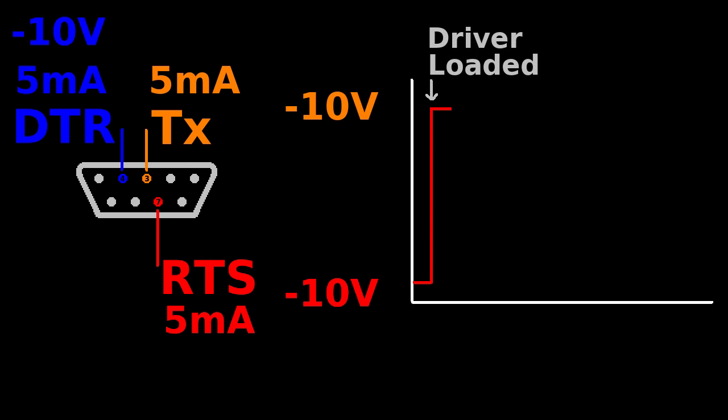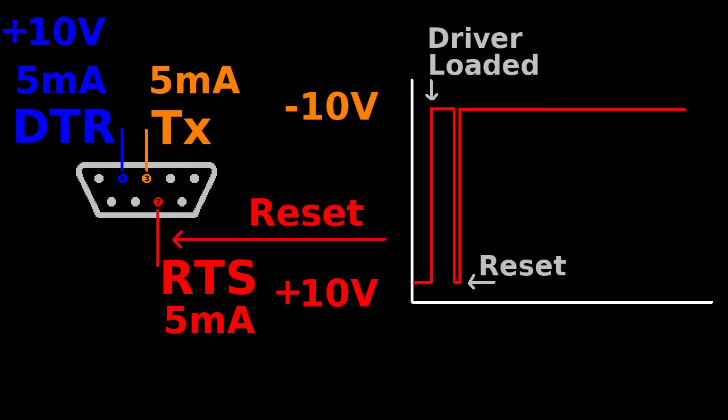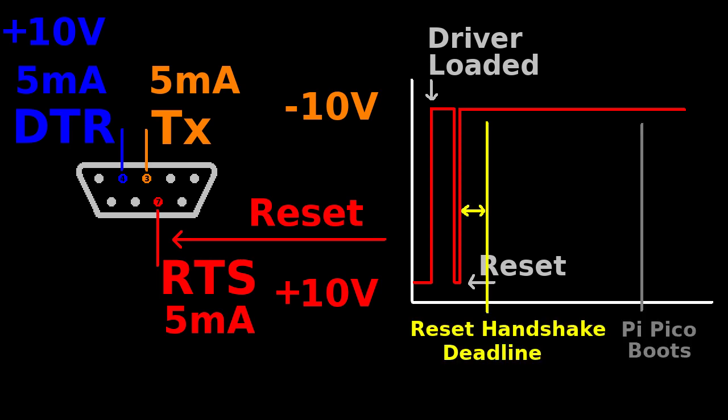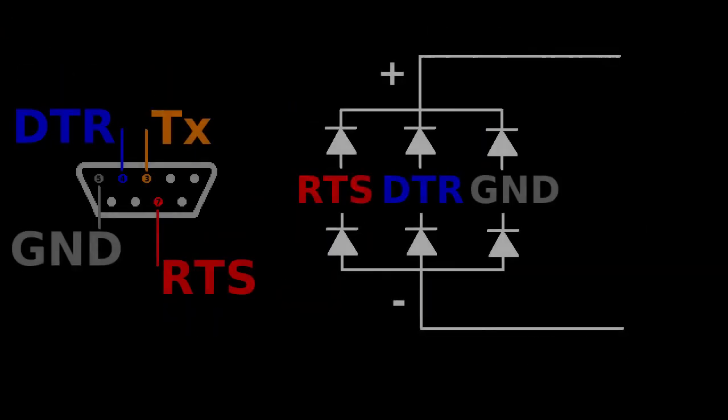When the mouse driver runs, it raises RTS and DTR to high, around plus 10 volts, and will immediately use RTS for the mouse reset handshake. But this happens so soon after RTS and DTR are high that we can't just wait until they're high to power the Pico, because it won't have enough time to boot and reply to the handshake. So we must power the Pico as soon as the serial port is connected, even when RTS and DTR have a negative voltage.